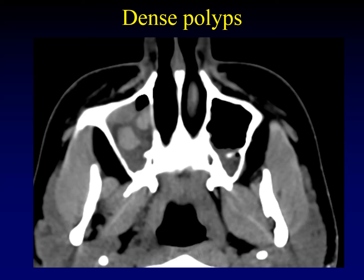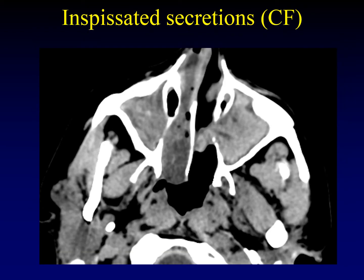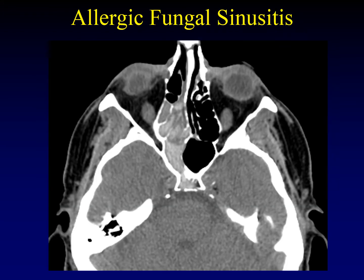Here's an example of radio-dense polyps interspersed with mucosal thickening that is not as dense as the polyps themselves — not all polyps are dense, but some are. This patient with cystic fibrosis can't clear mucus, and these dense secretions don't necessarily mean fungal superinfection, though we are particularly worried about that in patients who have undergone transplant and are immunocompromised. All forms of fungal sinusitis can have radio-dense secretions — this example happens to be allergic fungal sinusitis, but invasive fungal sinusitis and mycetomas can also have increased intrinsic radio-density.